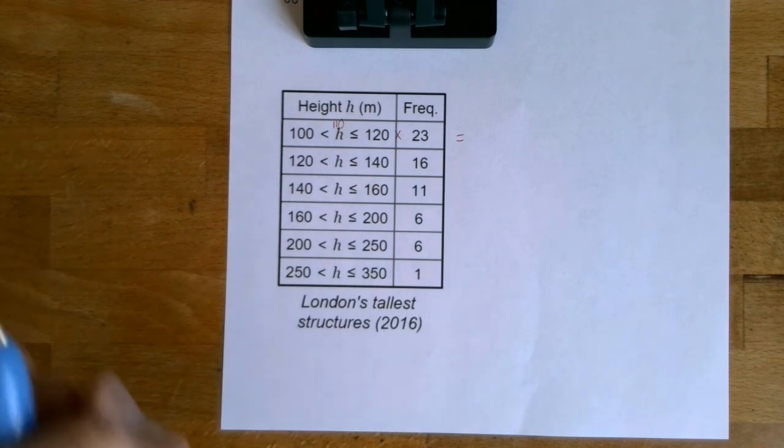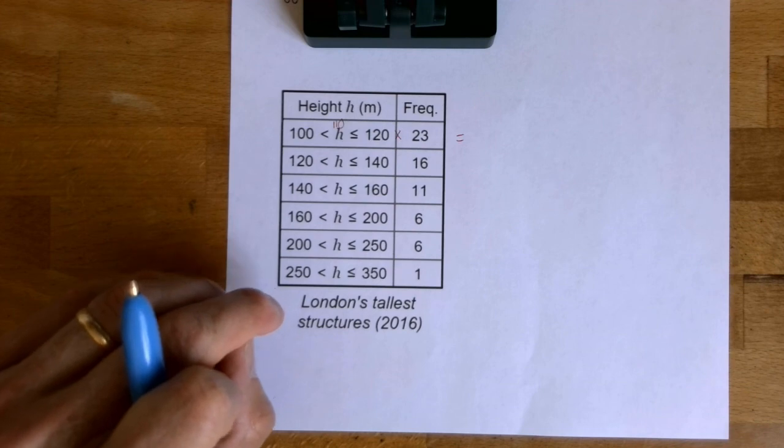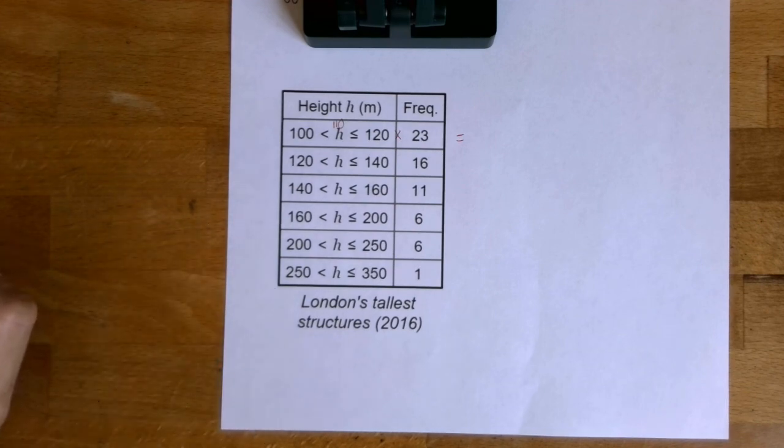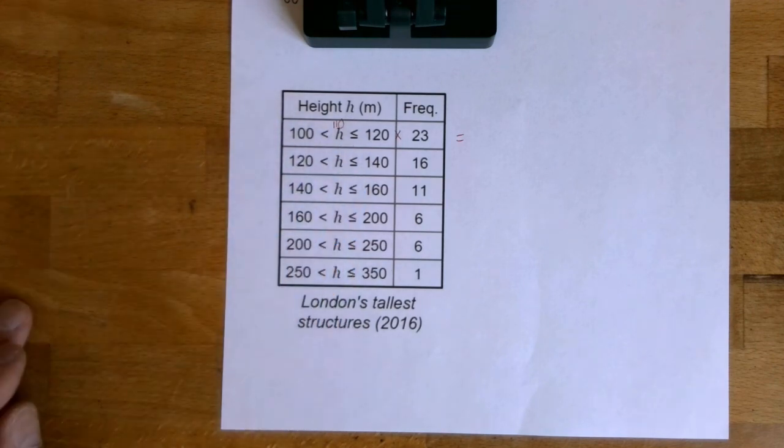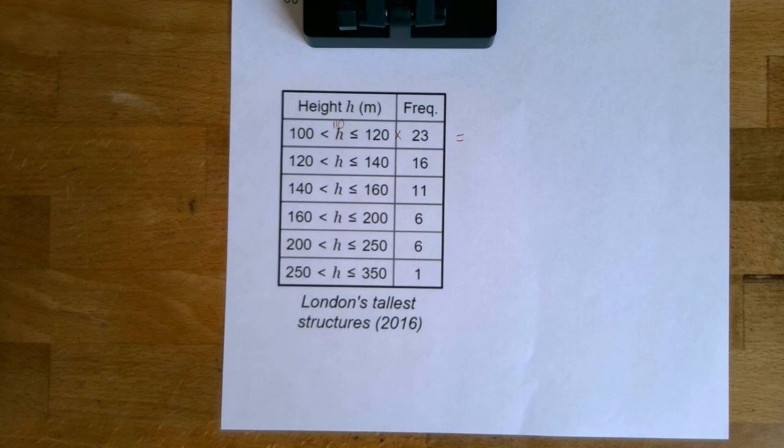So your challenge is to find the mean height of the tallest buildings in London. It's only going to be an estimated mean because we've only got the data arranged into groups. But I've attached the solution. So once you've had a go, see if you check the solution and see if you've got it right. I hope you're all well. Take care.